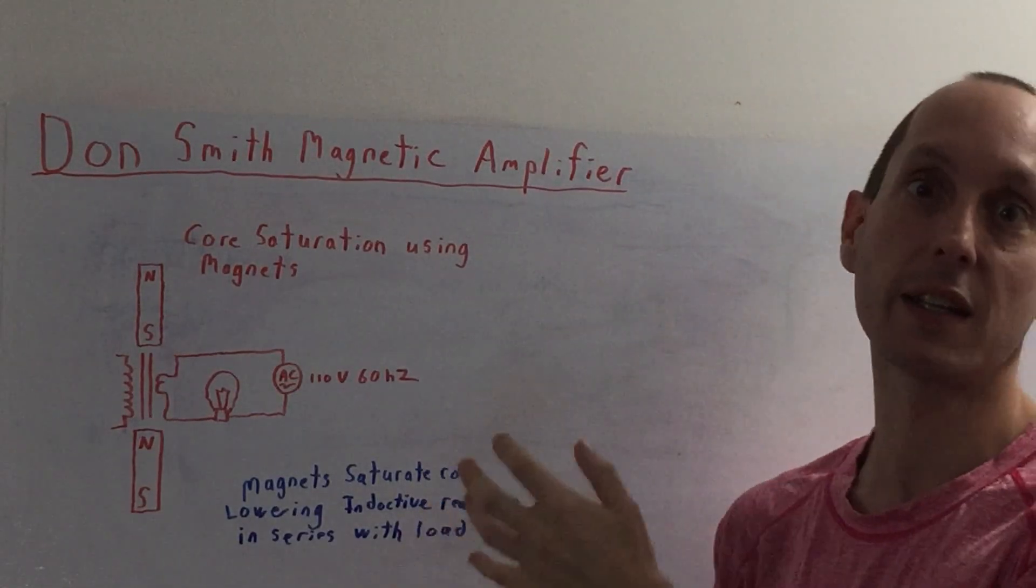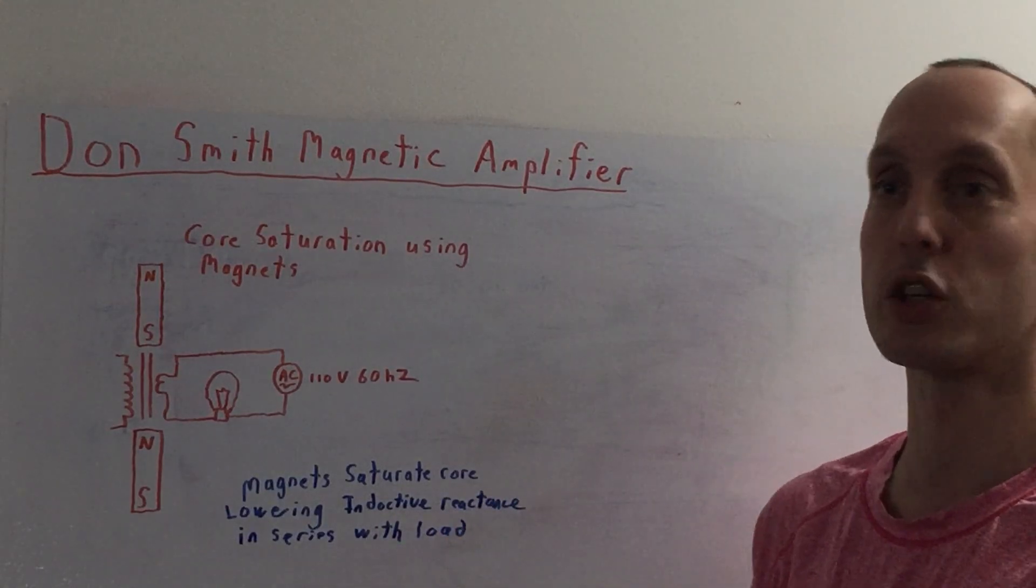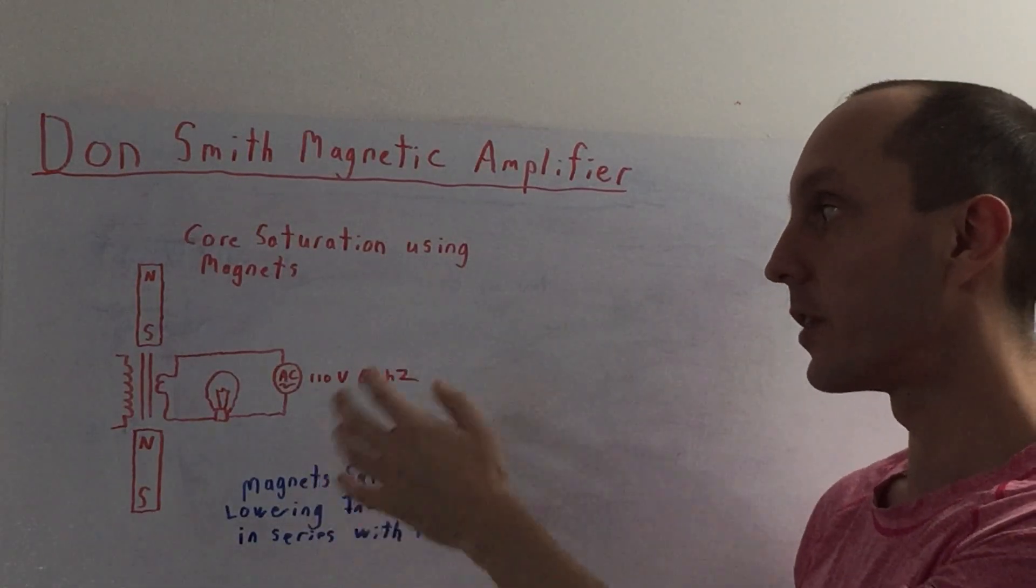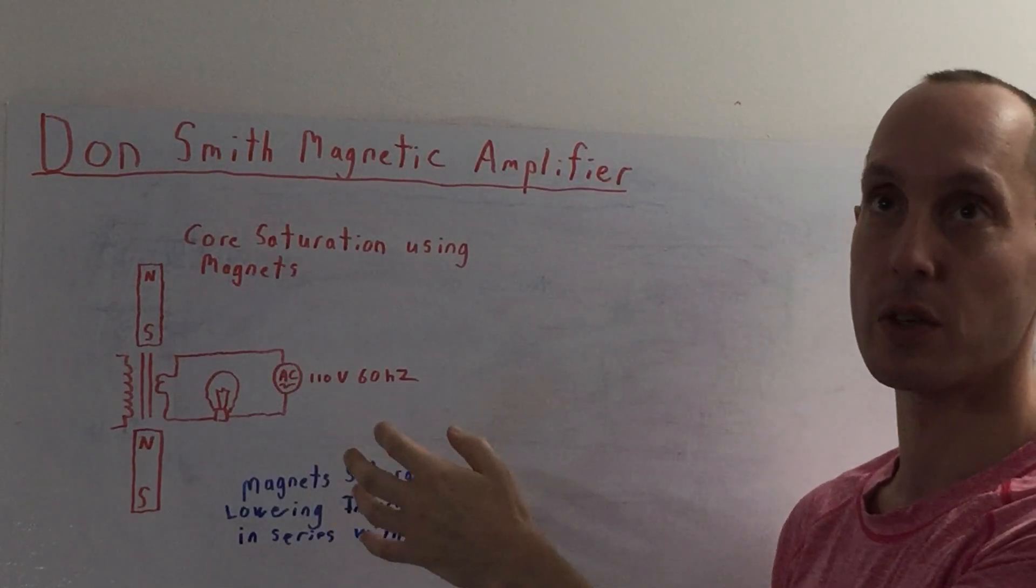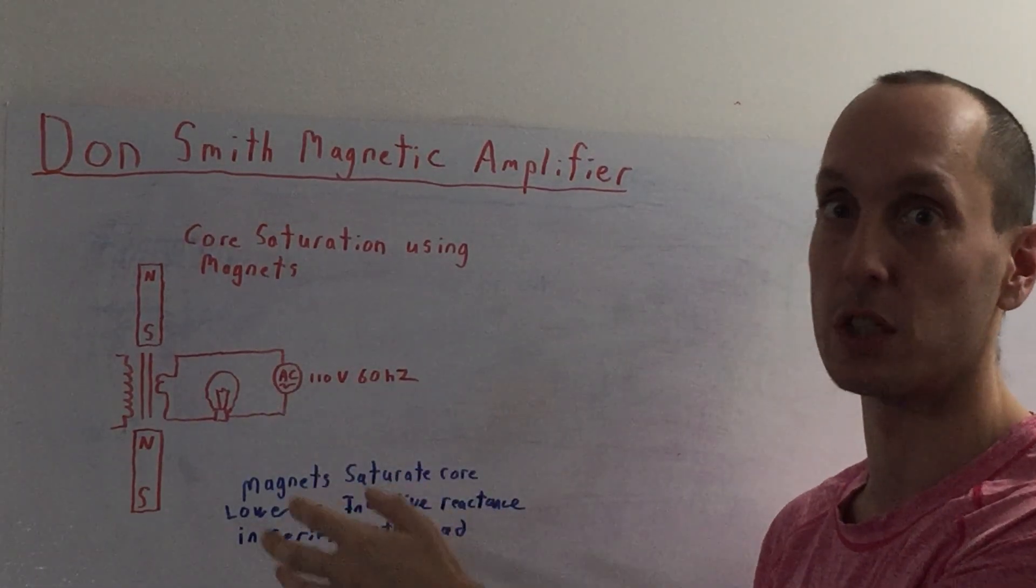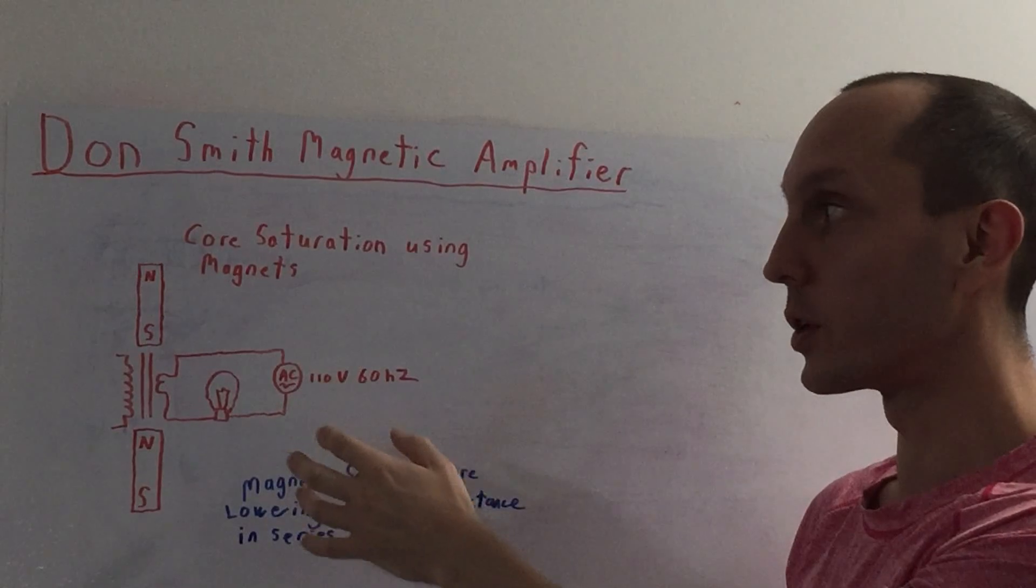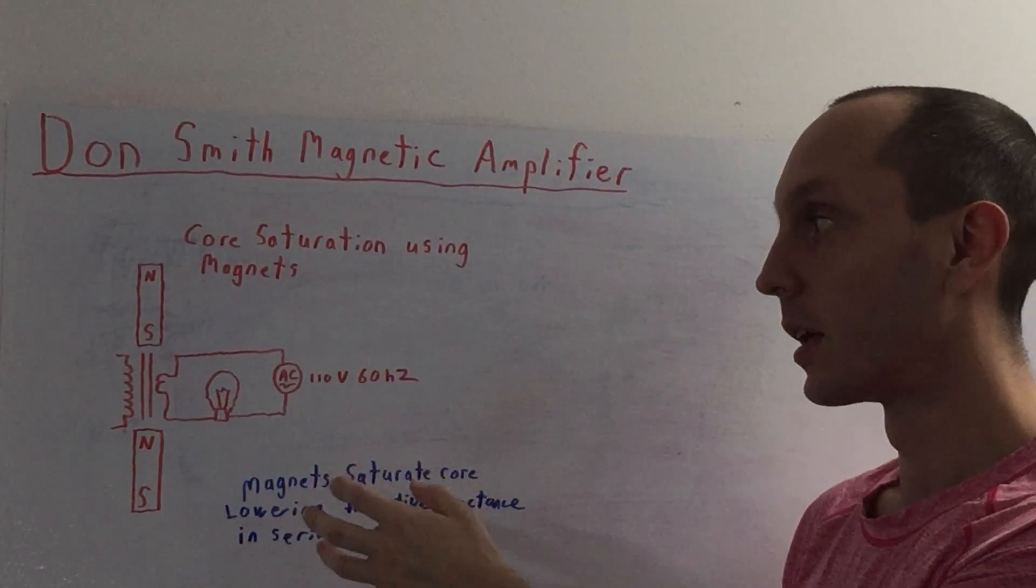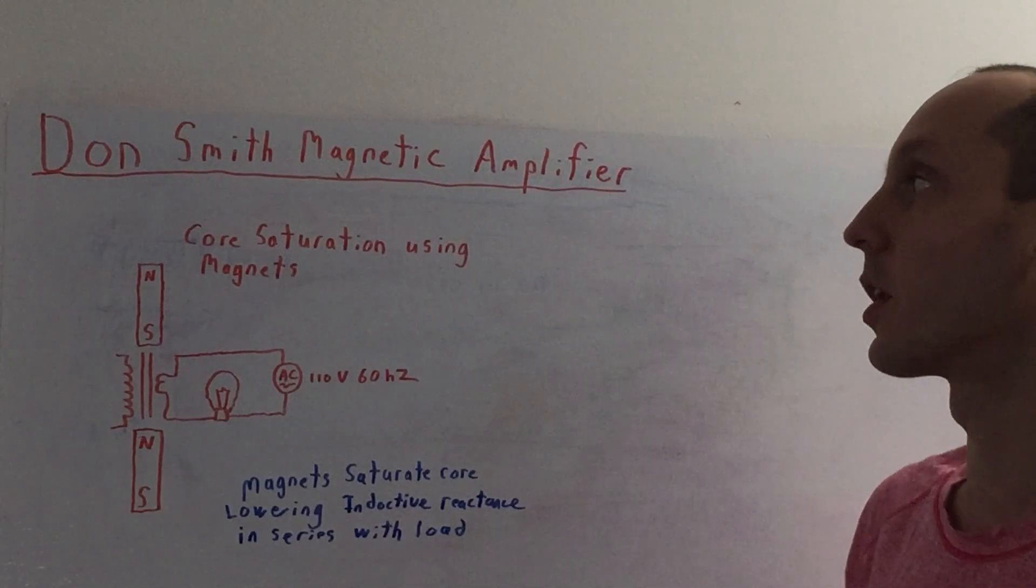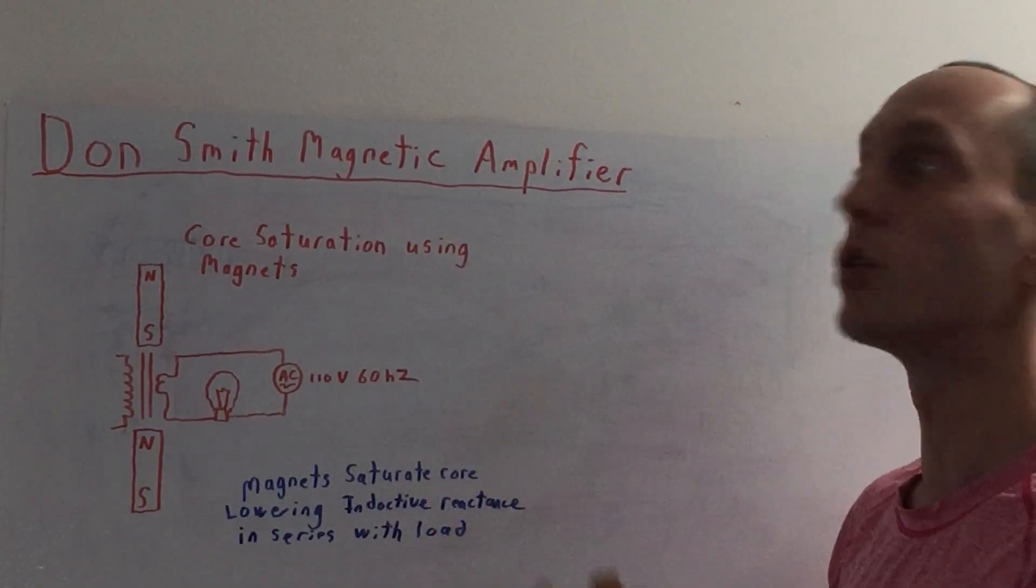So the magnetic amplifier, as I said, is a very ancient technology. It was very popular and still is in military applications because it has a very interesting feature. It allows us to switch very high current AC without needing transistors or any semiconductors. It is compatible at high frequency, so for radar and military application and microwave, very good for that. They've been using this since the beginning of times. Let's first start with explaining how the magnetic amplifier works in its traditional sense.